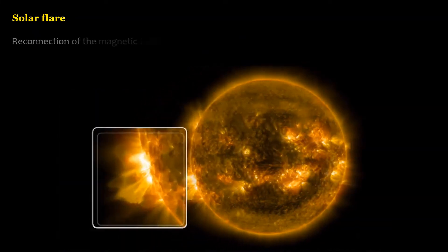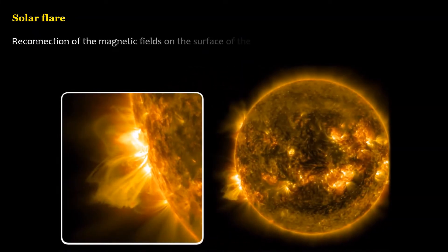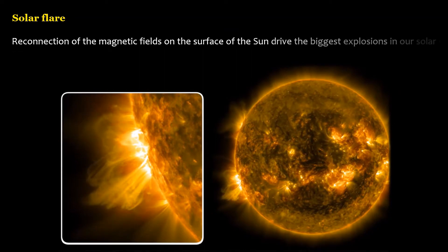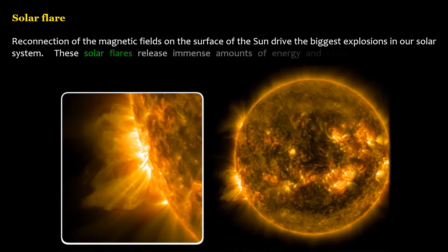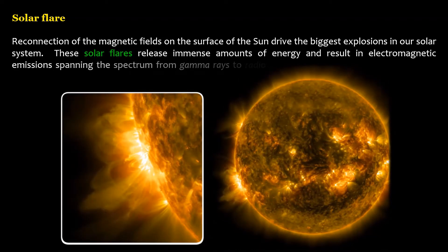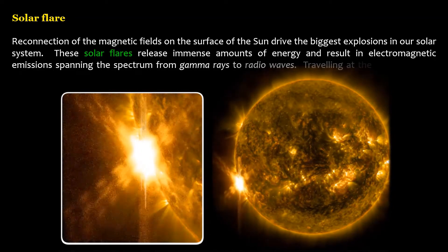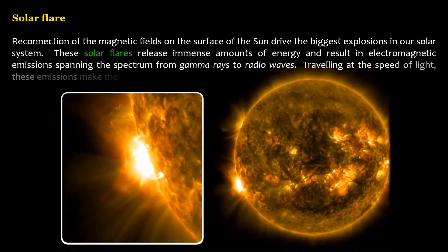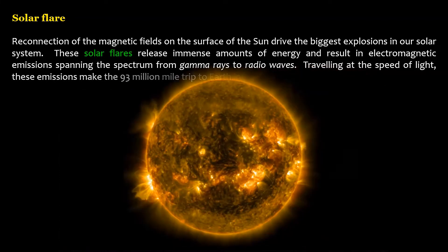Reconnection of the magnetic fields on the surface of the sun drive the biggest explosions in our solar system. These solar flares release immense amounts of energy and result in electromagnetic emissions spanning the spectrum from gamma rays to radio waves. Traveling at the speed of light, these emissions make the 93 million mile trip to Earth in just 8 minutes.